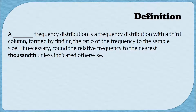A relative frequency distribution is a frequency distribution with a third column, which is formed by finding the ratio of the frequency to the sample size or population size. In these videos, we're going to be rounding the relative frequency to the nearest thousandth, unless we're told to do otherwise.